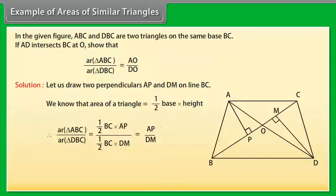Therefore, area of triangle ABC upon area of triangle DBC is equal to AP upon DM. In triangle APO and triangle DMO,